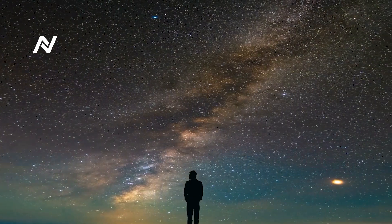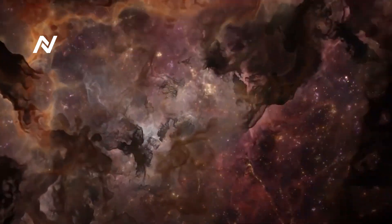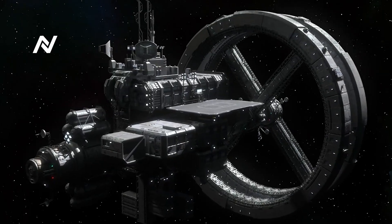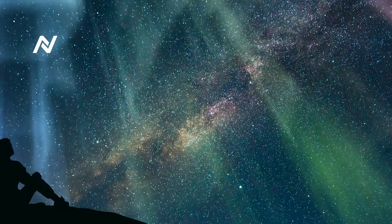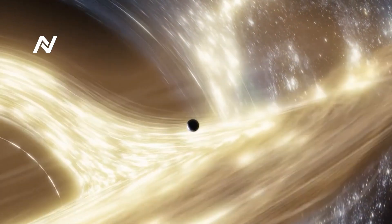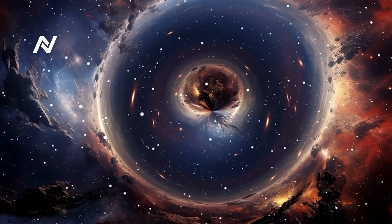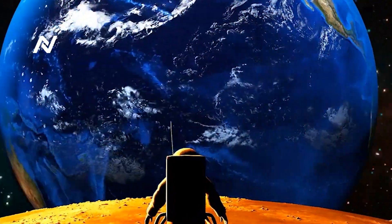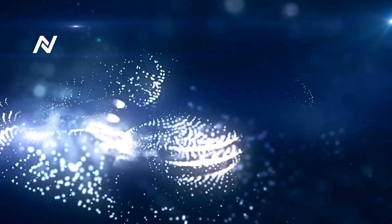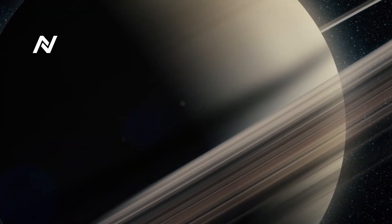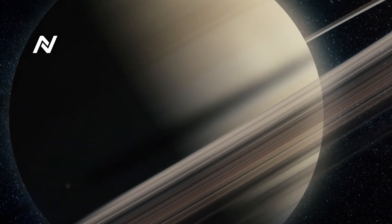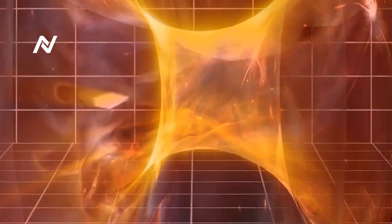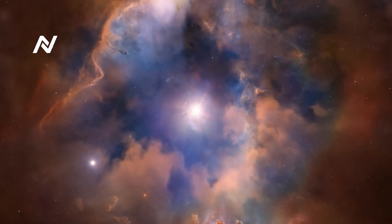But space-time isn't just about space, it's also about time. The closer you are to a massive object, the slower time moves. This is called time dilation. It's not something we can notice in our everyday lives, but it's a measurable effect. Astronauts on the International Space Station, for example, experience time slightly slower than we do here on Earth. The effect is tiny, just fractions of a second over their lifetimes. But it's real.